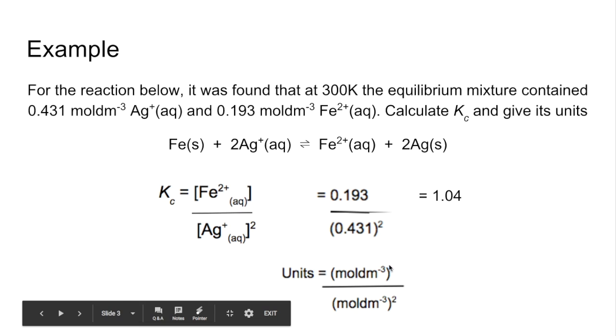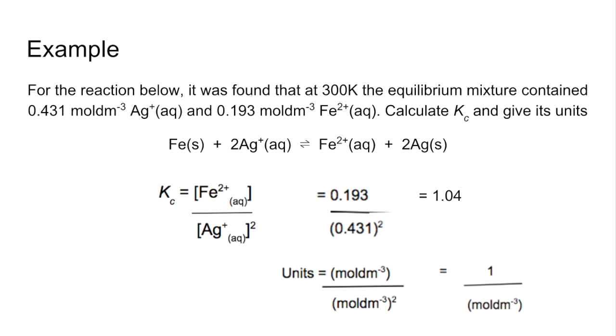So we can cancel this set of moles per decimetre cubed with one of these. So we're left with 1 over moles per decimetre cubed. And then taking everything up to the top, it becomes dm³ mol⁻¹.